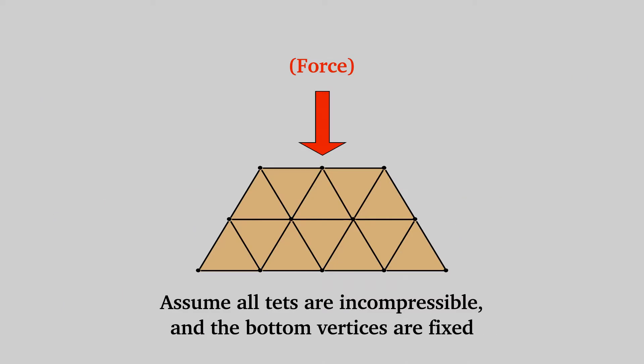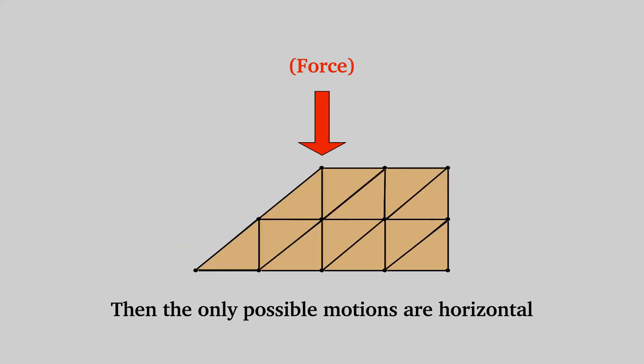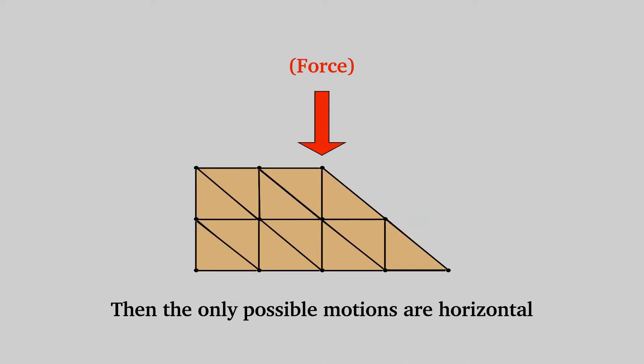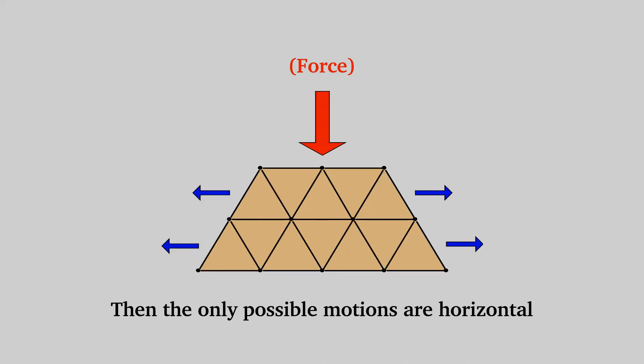For a simple demonstration of the concept of locking, take a look at this 2D example, where each triangle is incompressible and the bottom vertices are fixed. If you apply a downward force to the top-middle vertex, one would expect the top vertex to be pushed inwards. But due to the incompressible triangles, the only possible modes of deformation are restricted to the horizontal directions. Like in this example, enforcing element-wise incompressibility can result in inaccurate solutions.